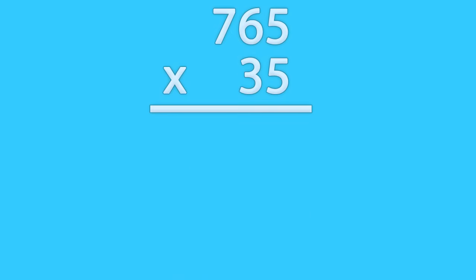What about 765 times 35? This one's a little harder. When you multiply the first two numbers, you get 25, a two-digit number. When this happens, you carry the tens number. That's the number on the left.